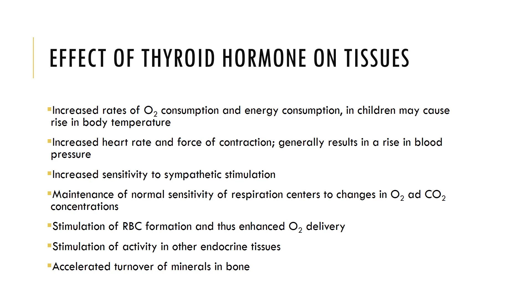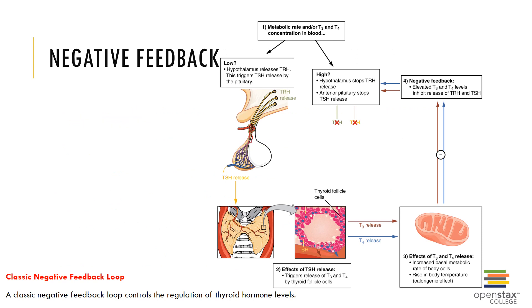Thyroid hormones have several effects in the body. They stimulate red blood cell production, enhancing oxygen delivery, and stimulate the activity of other endocrine tissues. They accelerate mineral turnover in bone, elevate rates of oxygen and energy consumption in cells thereby increasing basal metabolic rates, increase heart rate and force of contraction which can result in increased blood pressure, increase sensitivity to sympathetic stimulation, and maintain normal sensitivity of respiratory centers to changes in oxygen and carbon dioxide concentrations in the blood. A classic negative feedback loop controls the regulation of thyroid hormone levels.